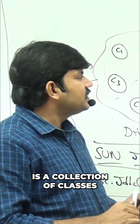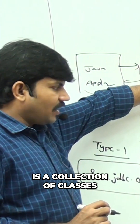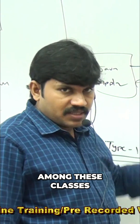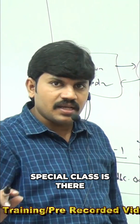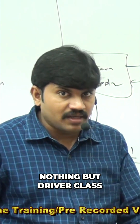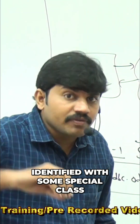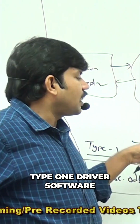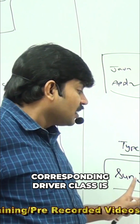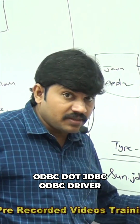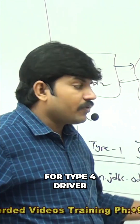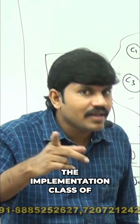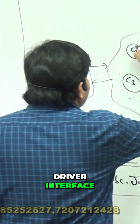Every driver software is a collection of classes which provides implementation of the JDBC API. Among these classes, there is one special class — that special class is the driver class. Every driver software is identified with some special class called the driver class. For Type 1, the driver class is sun.jdbc.odbc.JdbcOdbcDriver; for Type 4, the driver class name is oracle.jdbc.OracleDriver.